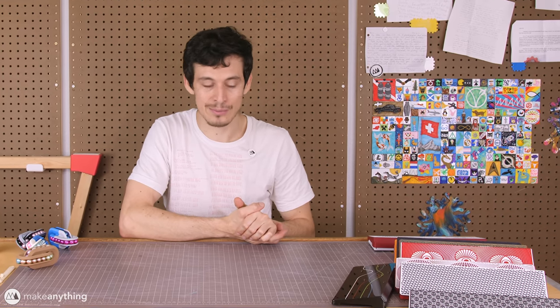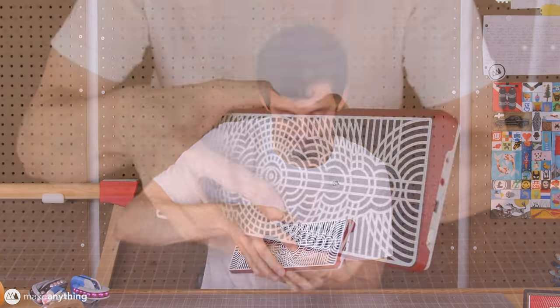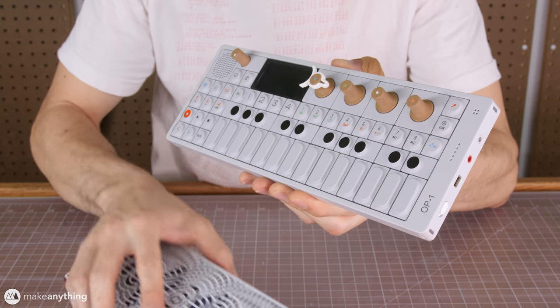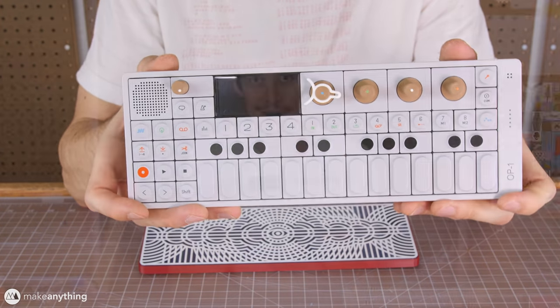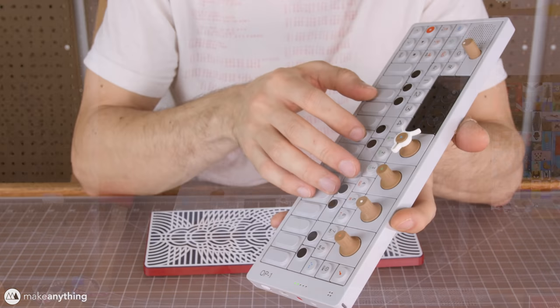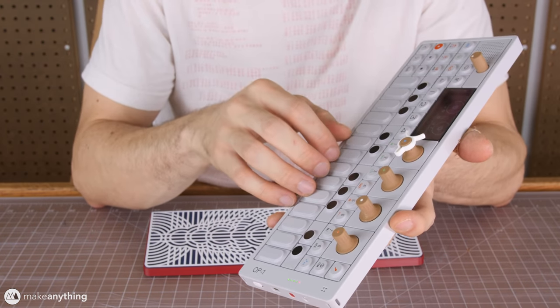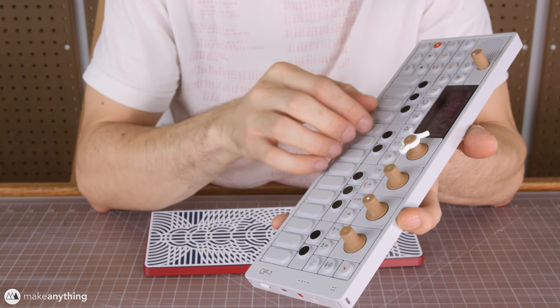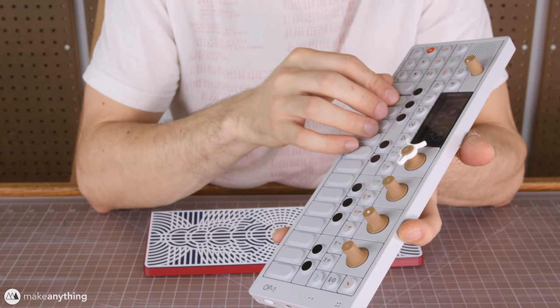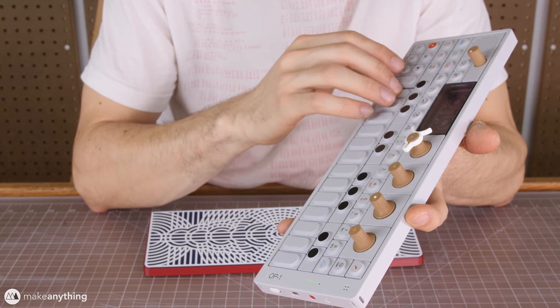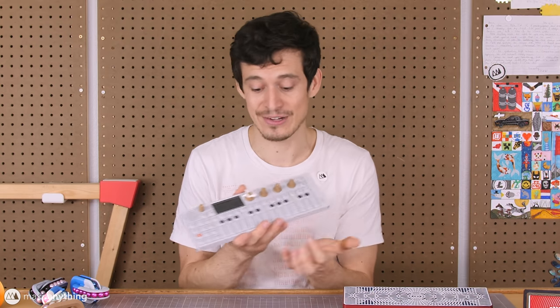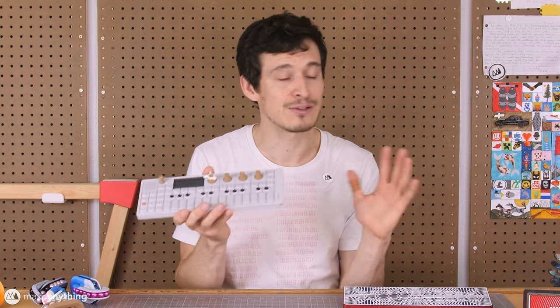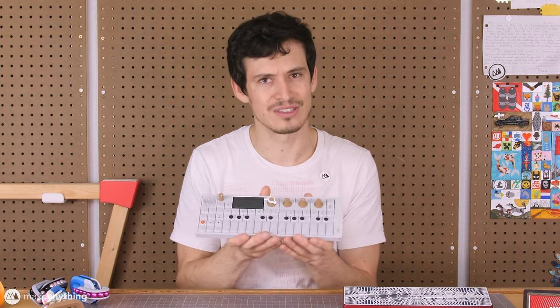Let's go ahead and move on and direct our attention to this side of the table, where we have all sorts of fancy, colorful-looking rectangles. These are actually all protective cases for this thing. And this is the OP-1. It's one of my favorite products that I own. It's a little musical synthesizer by a company known as Teenage Engineering. And while this thing looks and feels very playful, it is an extremely powerful instrument as well. You can record full tracks on it. You can make beats. You can sample sounds from around the world. You can do all sorts of things with it.